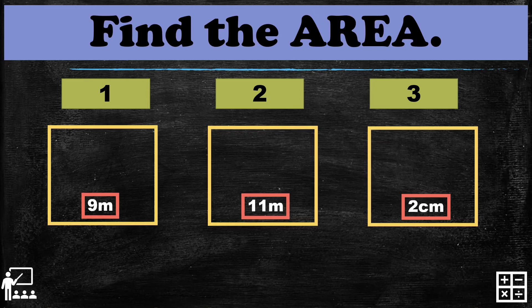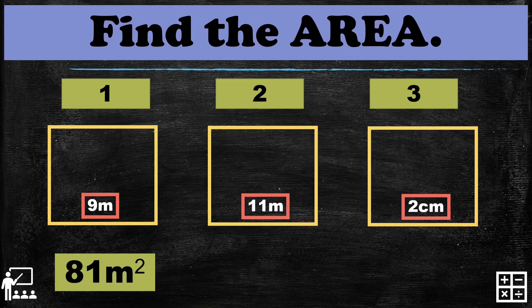Time is up. I'm going to show you the answers — correct yours if it is wrong. The area for square number one is 81 meters squared. We find the area by multiplying 9 times 9, which is 81, and the unit is meters squared.